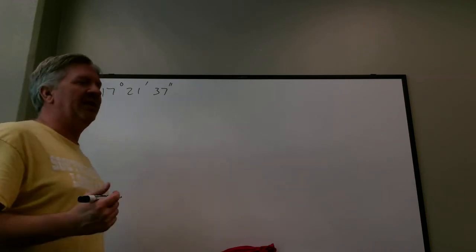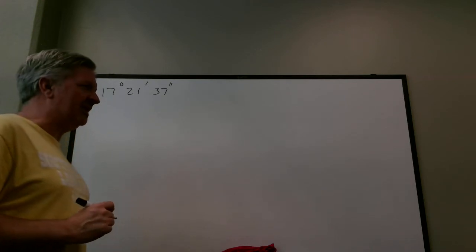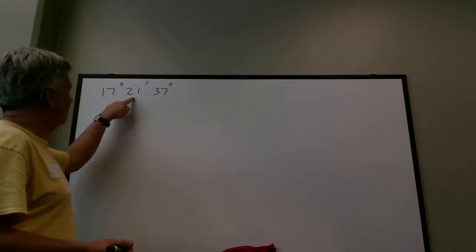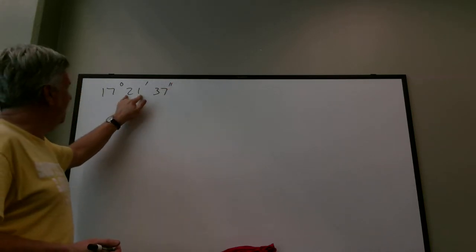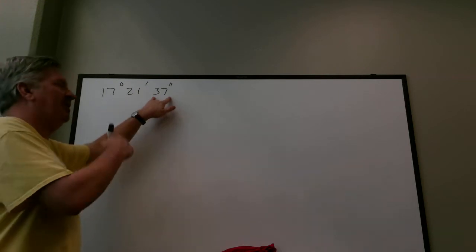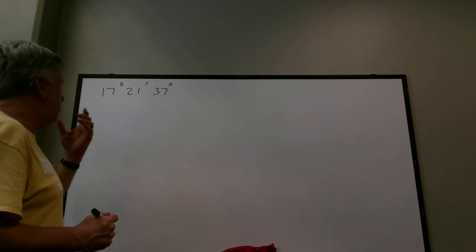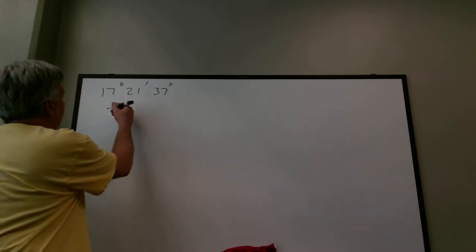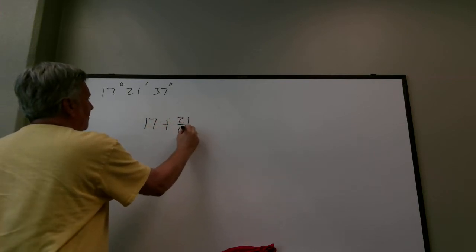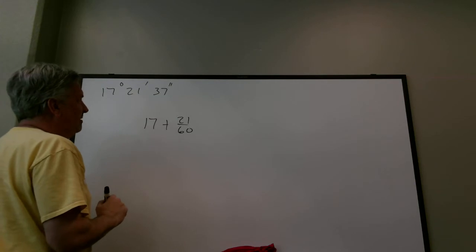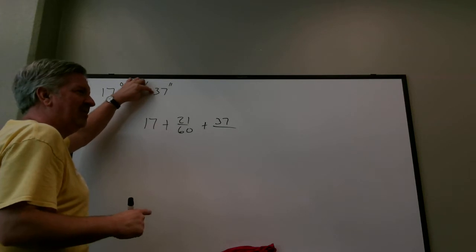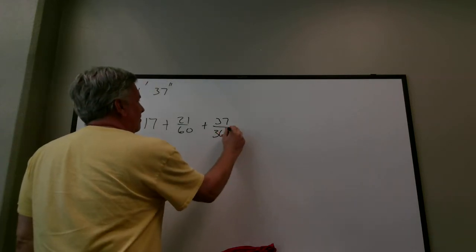What I'm typically going to do in the lecture, I'm not going to go through all that unit conversion. If you think about what we did, we divided the 37 by 60, added it to the 21, then divided by 60 again. We divided 21 by 60 once, and divided 37 by 60 twice — which is the same as dividing by 3600.